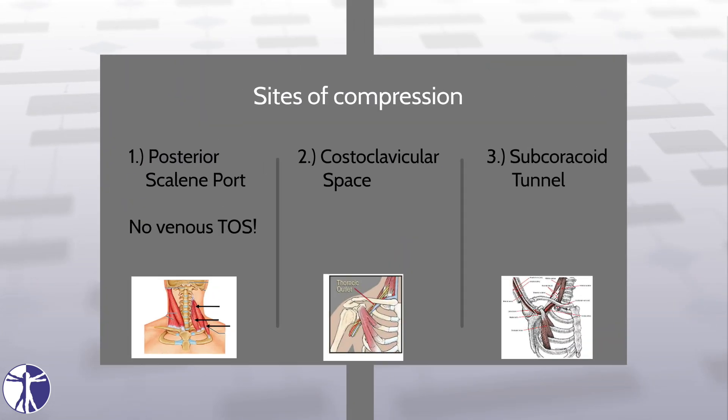There are three different sites of compression of the brachial plexus. The first site is between the anterior and middle scalenes, which together form the posterior scalene port. Venous TOS cannot occur here as the subclavian vein is not passing through this port. The second site is the costoclavicular space between the clavicle and the first rib. The third site where compression can occur is in the subcoracoid tunnel between the pectoralis minor tendon.